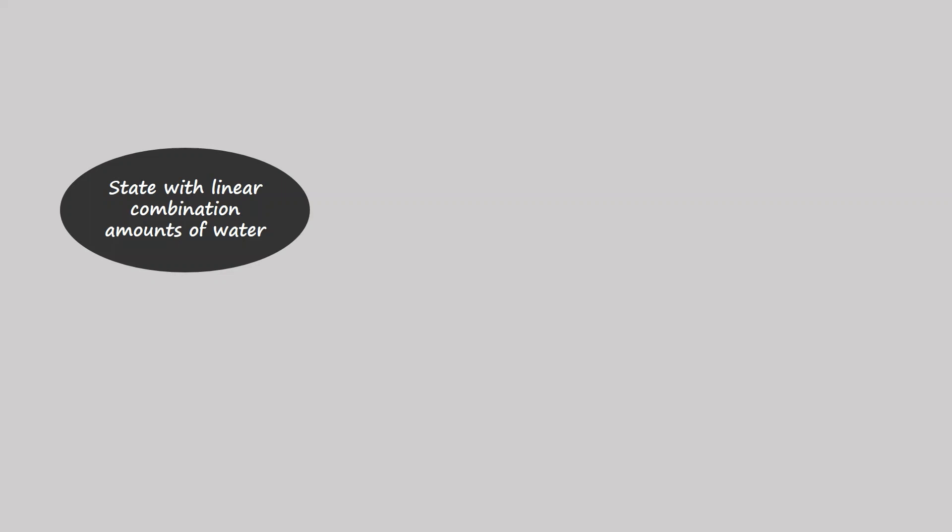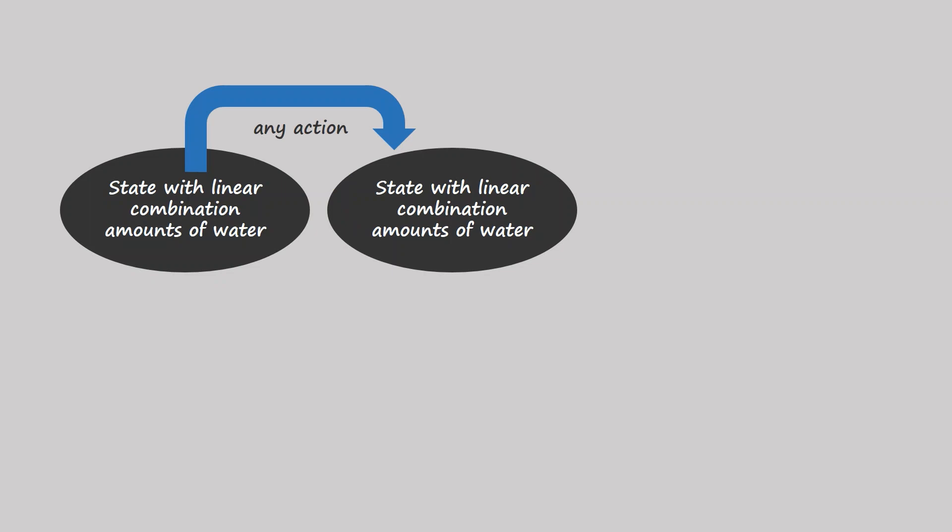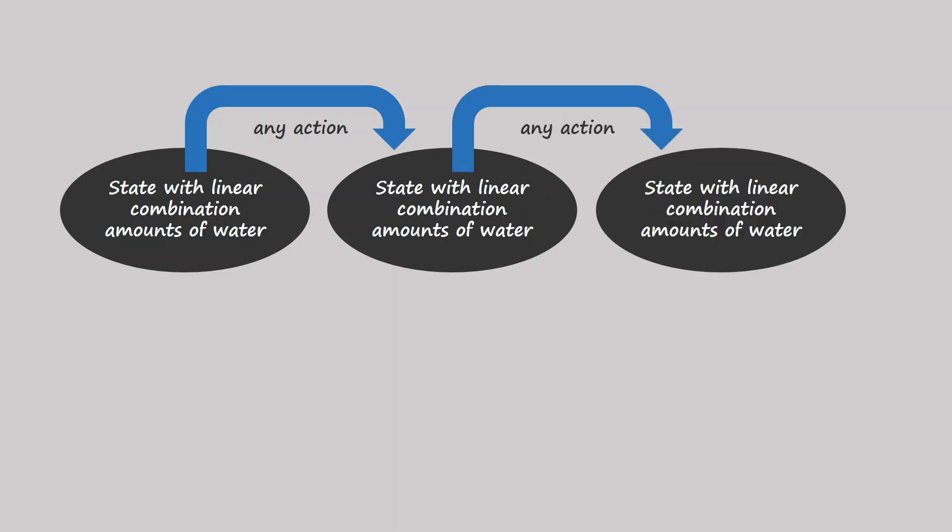So we always start with a state that has integer linear combinations. Any action we take from here will give us another state with integer linear combinations. Any action we take after that will also give us a state with integer linear combinations. And so on. The proof is now done.